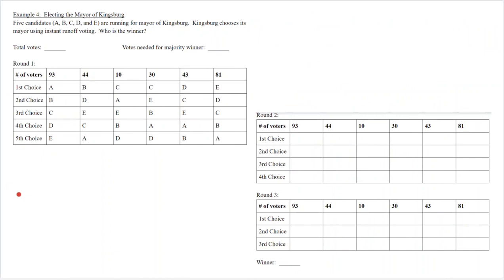Let's look at another example: the mayor of Kingsburg with five candidates A, B, C, D, and E, chosen using instant runoff voting. Adding up the votes, there are 301 total votes, so a majority is 151. In round one: candidate A has 93 first place votes, B has 44, C has 40, D has 43, and E has 81. We eliminate candidate C, who has the fewest, and continue since nobody has 151 yet.